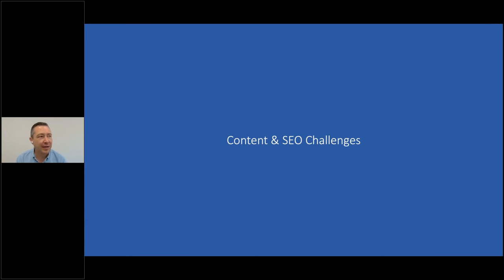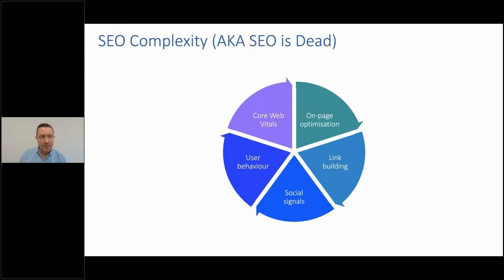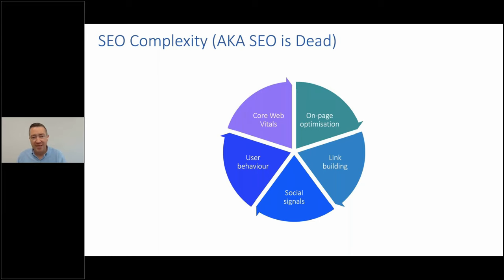That leads us into content and SEO challenges. There's more noise, more content, and AI-generated content out there. SEO has become slightly more complex. But the better and more advanced Google's algorithm is, the less you need to worry about it — because what Google wants is for you to search and get really good results. If we write content for our target audience and they love and engage with it, that ticks the box for the algorithm. Google knows if we love content through thousands of algorithmic factors.